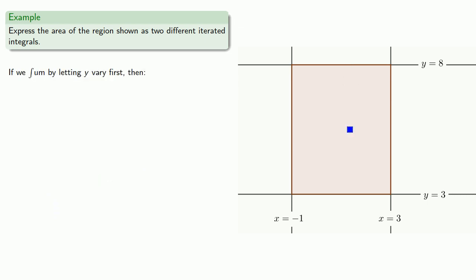We could also sum by letting y vary first, and so we'll move vertically. And so in that case, y goes from y equals 3 to y equals 8. And then x will vary from x equals negative 1 to x equals 3. And so we can write our integral as the sum when we let y vary from 3 to 8, then let x vary from negative 1 to 3.